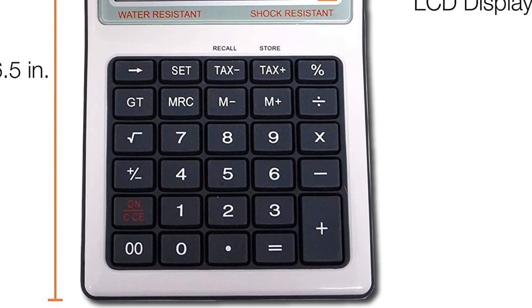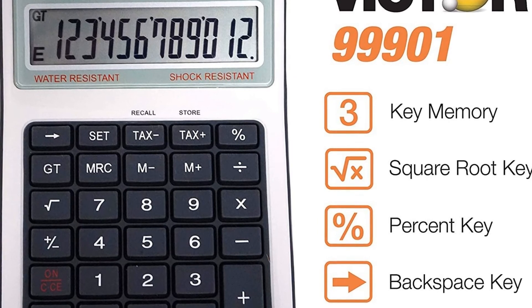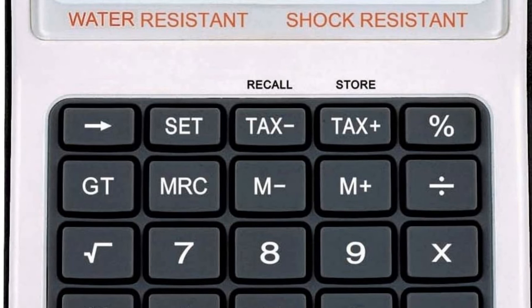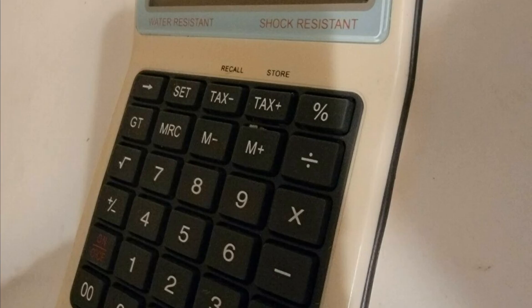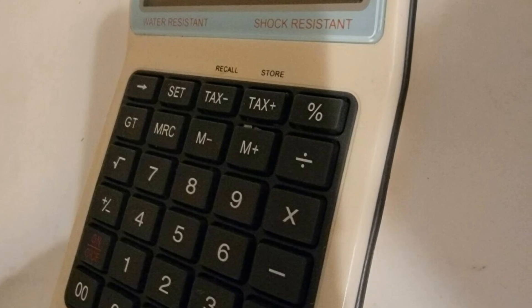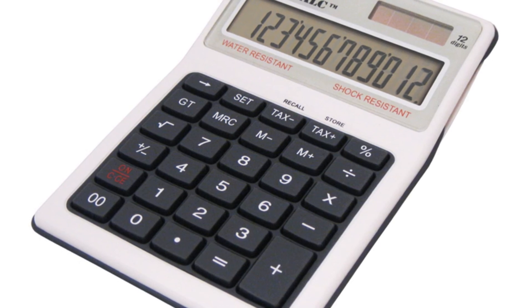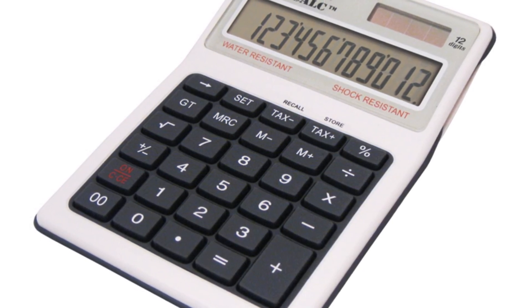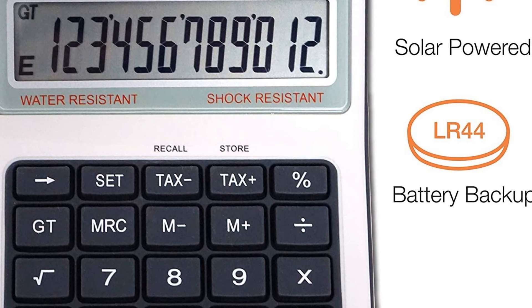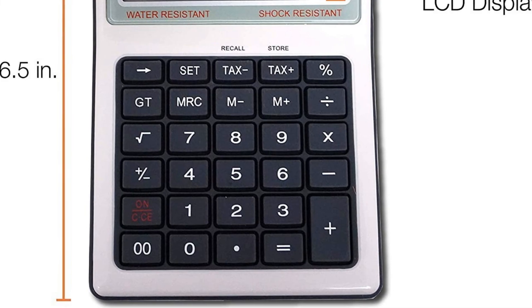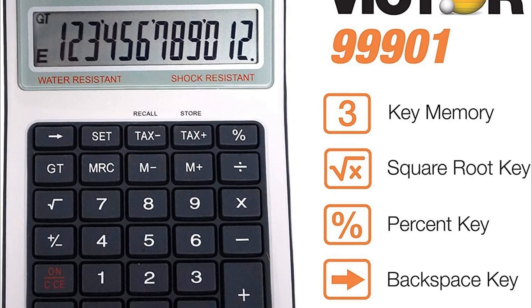Large 12-digit display is easy to view. Functions include tax plus or minus keys, backspace, grand total, three-key memory, square root, and change sign. Features: large 12-digit display, sealed rubber keypad, acrylic protected display, water resistant and shock resistant, perfect for working conditions where weather, dirt, or germs are a factor. Washable with soap and water. Operates on hybrid power: solar with battery backup.